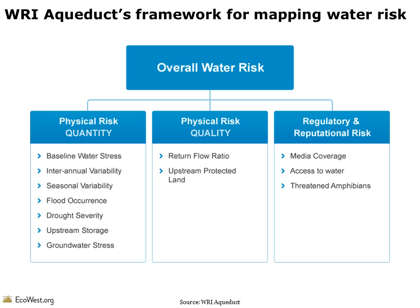WRI's tool maps overall water risk by examining a dozen factors in three categories. The system is meant to help businesses, investors, governments, and communities better understand vulnerabilities to water-related risks.